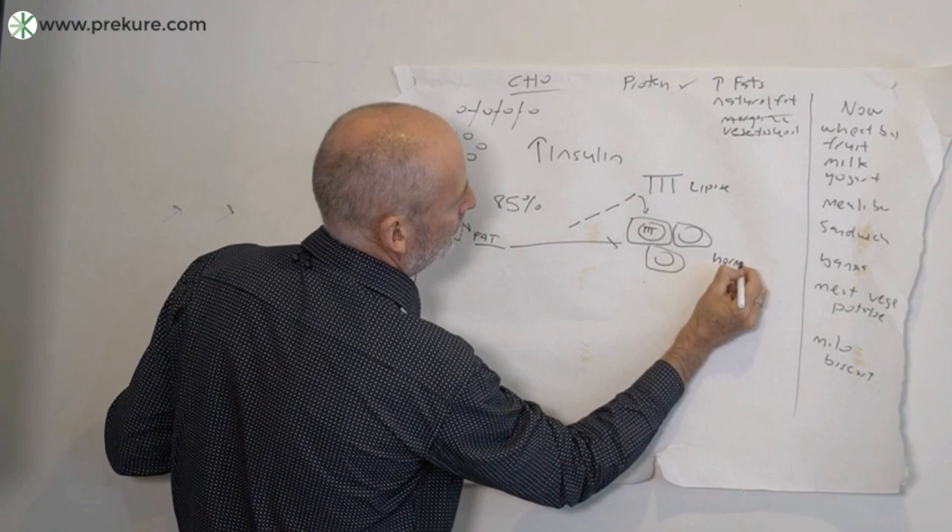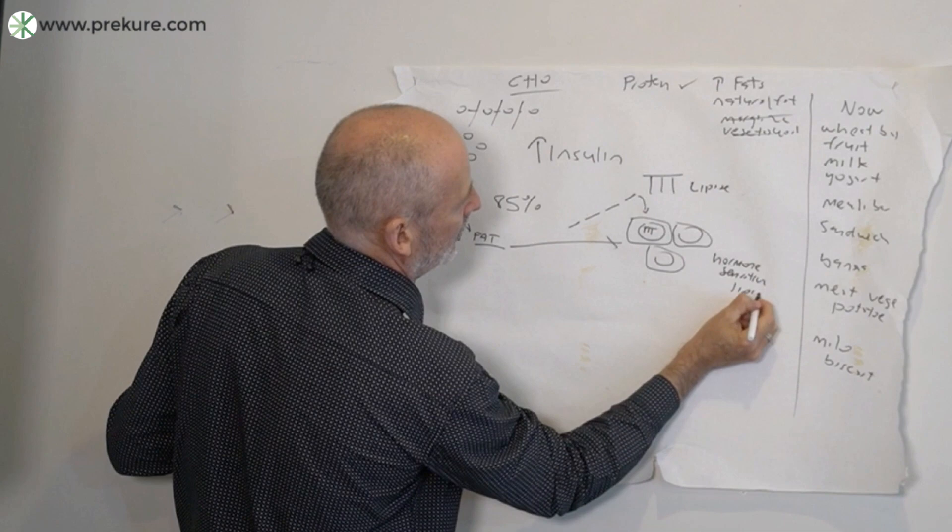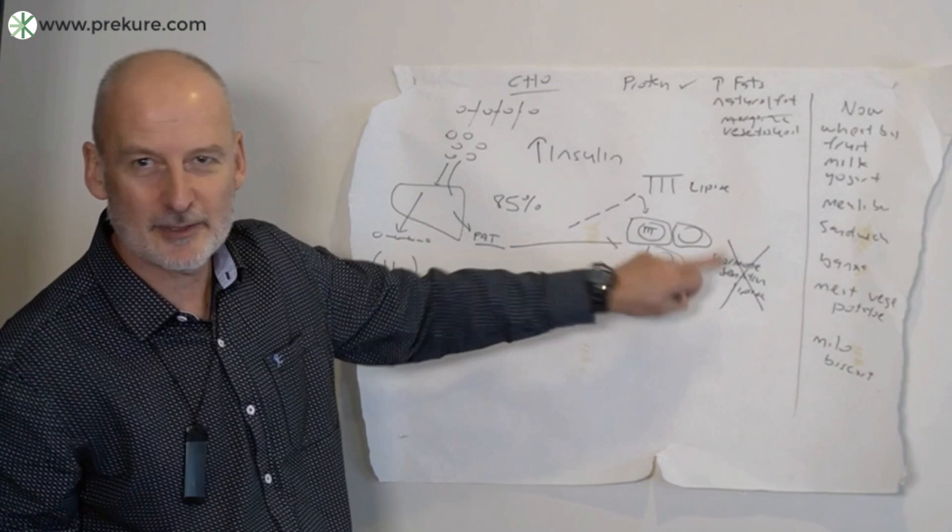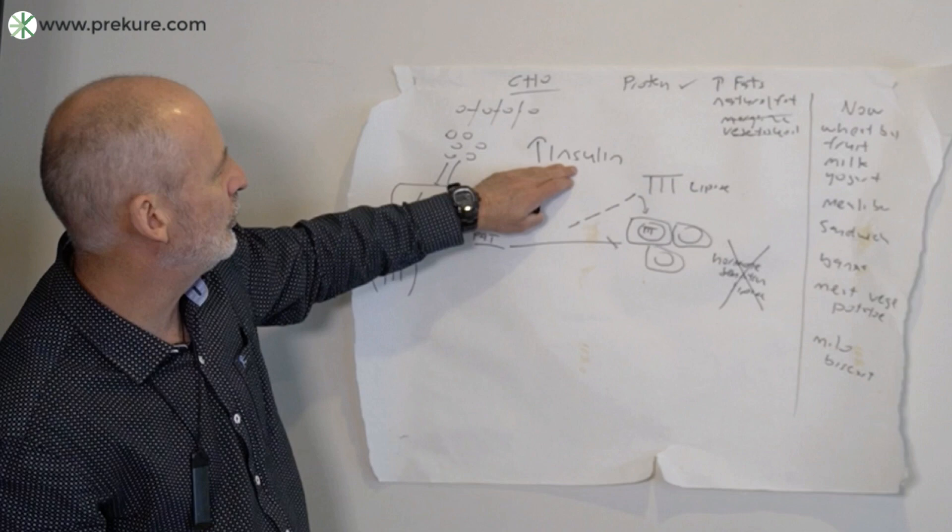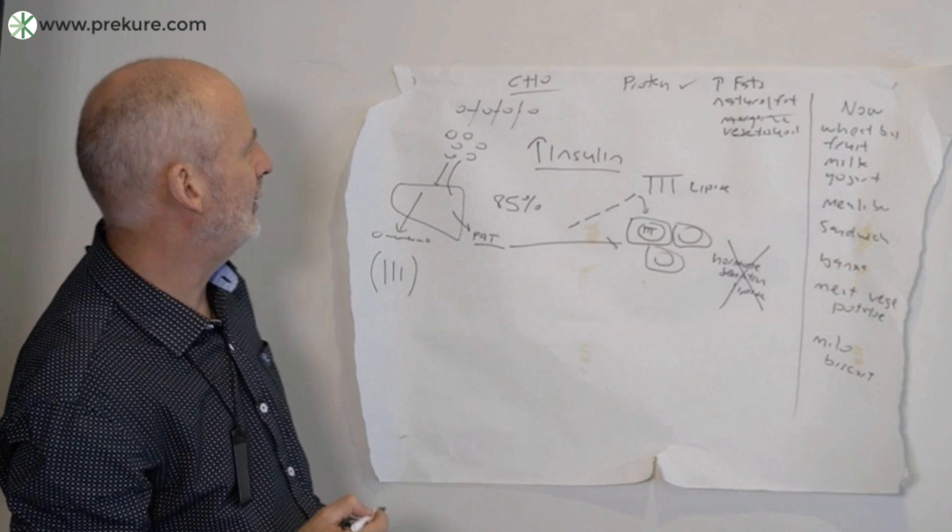The problem is that you need another enzyme to break that down to get it out again, and that's called hormone sensitive lipase. Big problem: high levels of insulin caused by eating too much carbohydrate completely turn off hormone sensitive lipase. So what happens? The fat is stuck in there. So even if you eat less, if your insulin levels are still high, the fat can't get out. It's stuck in there.